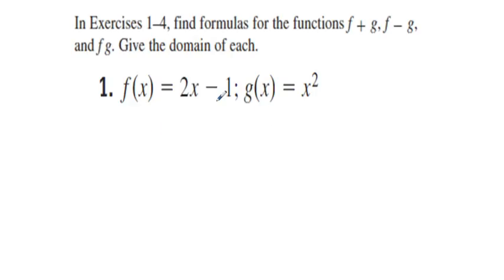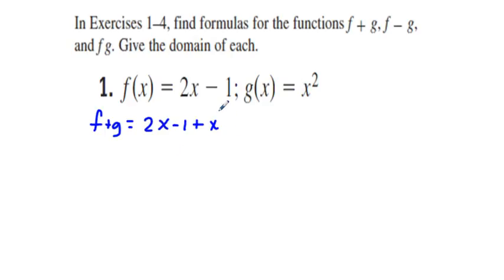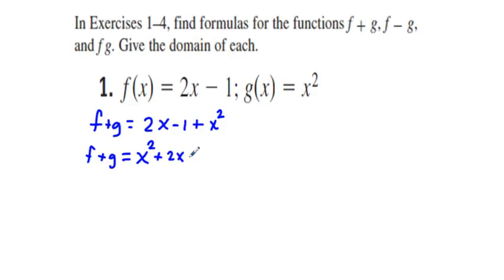So we can simply say f plus g is equal to 2x minus 1, and then we add g, which is x squared. Writing in standard form — higher powered terms first — that gives us x squared plus 2x minus 1.